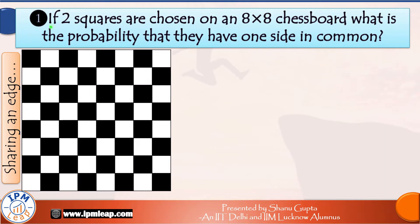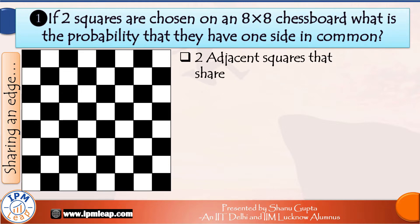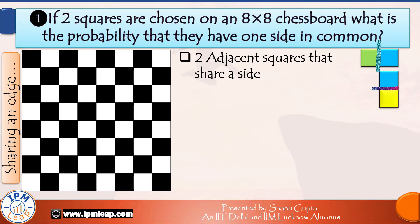Our first question is: if two squares are chosen on an 8×8 chess board, what is the probability that they have one side in common? So we need to know in how many ways can we select two squares which share a side. Those two squares will obviously be adjacent ones. If they share a side, then either they will be positioned one beside another — the shared edge is a vertical line — or else they will be positioned one on top of another, where the shared edge will be a horizontal line.